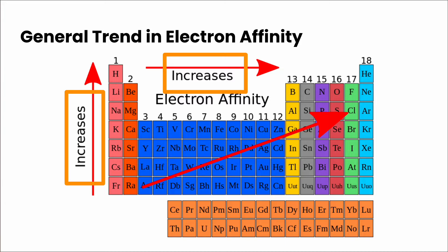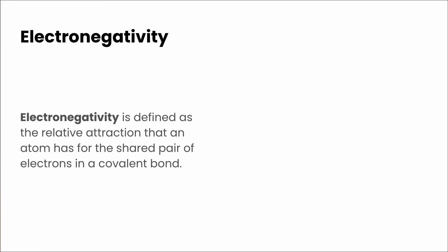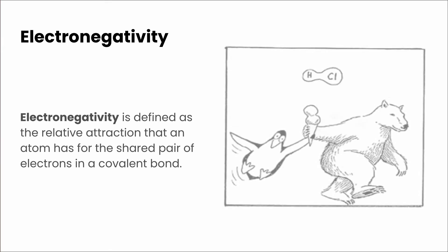The trends for electron affinity are not as well defined as ionization energy, atomic radius, or electronegativity, which we're going to look at next. As we look at our new atomic model in future chemistry courses, we'll explain this trend in particular further, so we're just going to leave this one here for now. Electronegativity — we are going to get into this in future videos, but just to define it very briefly, it's defined as the relative attraction that an atom has for a shared pair of electrons in a covalent bond.